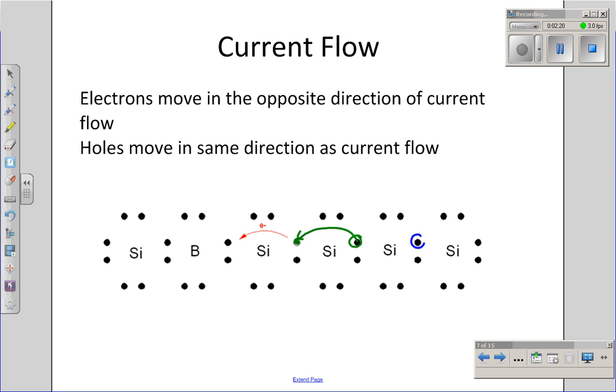A little while later, another electron can jump out of its covalent bond and fill that hole, creating another hole to the right. The net result is it looks like I've got holes flowing to the right. I could treat holes as a type of charge carrier. So I have holes to carry charge as well as electrons.